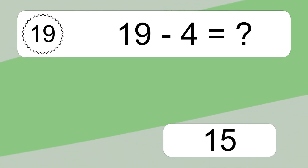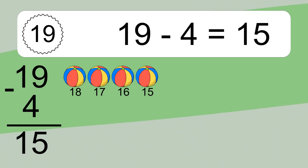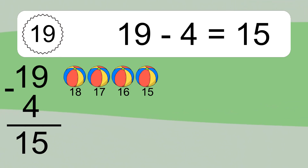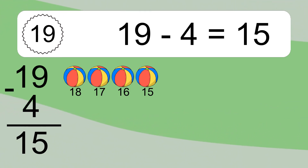19 minus 4 equals 15. Let's count it: 18, 17, 16, 15.